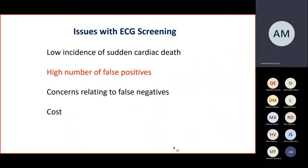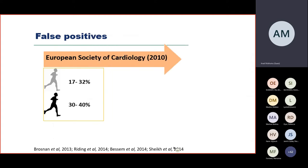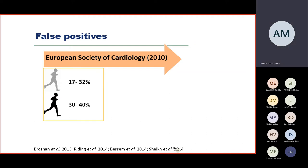Another issue with screening athletes is the high number of false positives. While the ECG helps detect cardiomyopathies and primary electrical disorders, which account for the majority of sudden cardiac deaths in young athletes, concerns still remain about false positive rates with significant clinical, psychological, and financial implications. These rates are as high as 32% among white athletes using the European Society of Cardiology's initial recommendations, and up to nearly half of black athletes having a false positive rate.